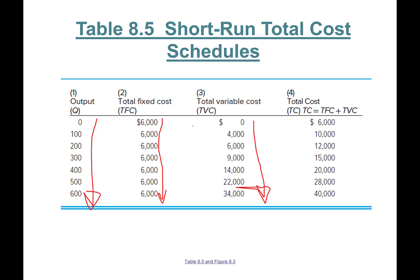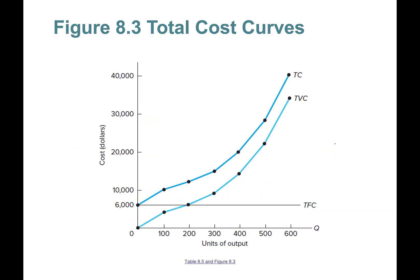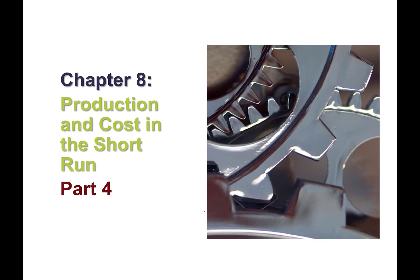Add the TFC and TVC columns together to get total cost. If we draw this, total cost starts from $6,000 and goes up, total variable cost starts from zero and rises parallel to total cost, and total fixed cost is a straight horizontal line by definition.